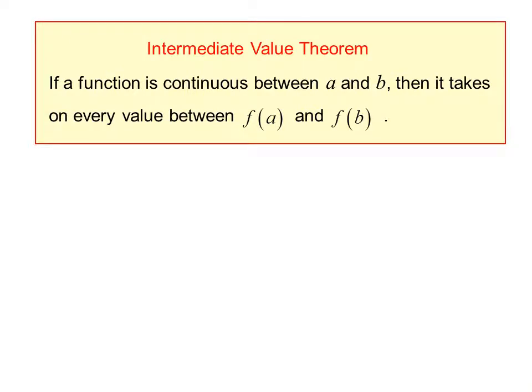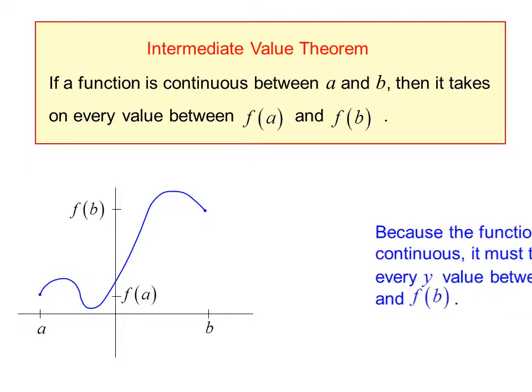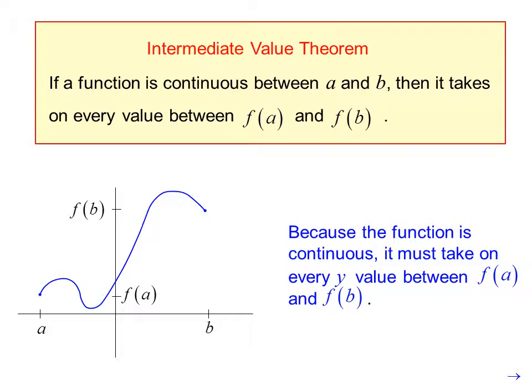The intermediate value theorem. If a function is continuous between a and b, then it takes on every value between f of a and f of b. In this illustration, x goes from a to b, and y goes from f of a to f of b. Since we know the function is continuous, there are no breaks. It must take on every y value between f of a and f of b.